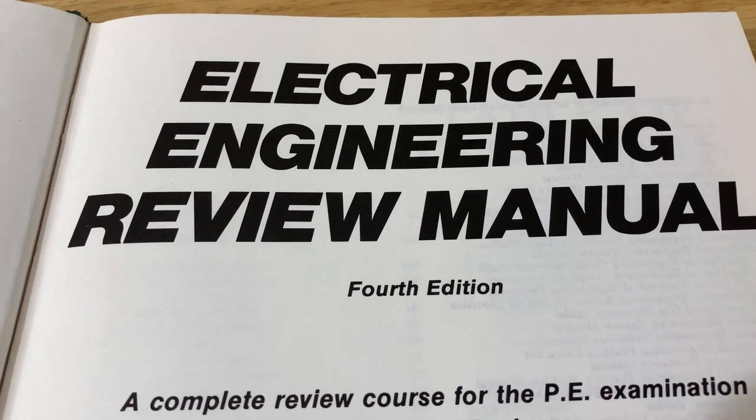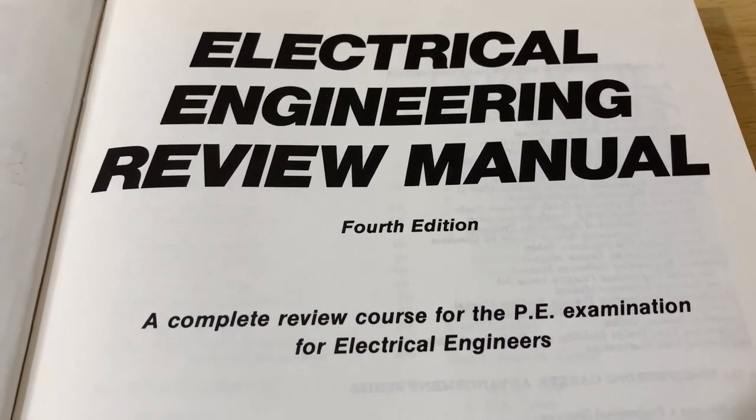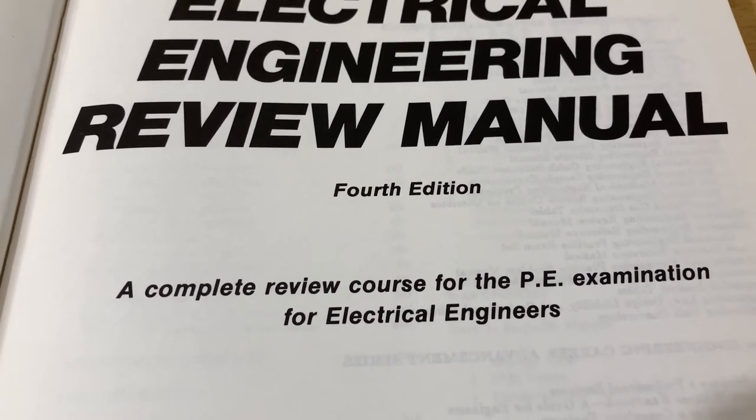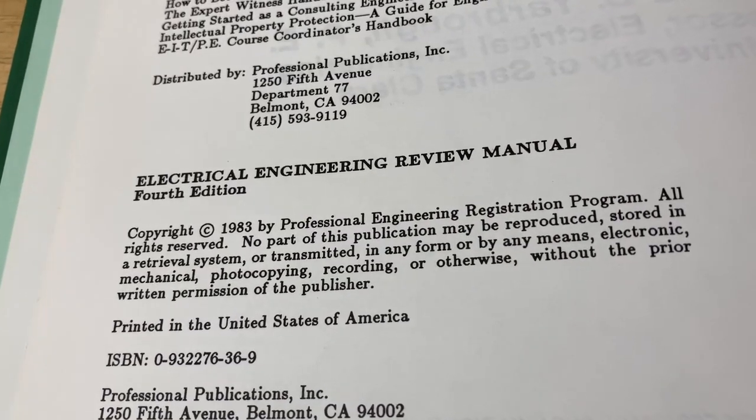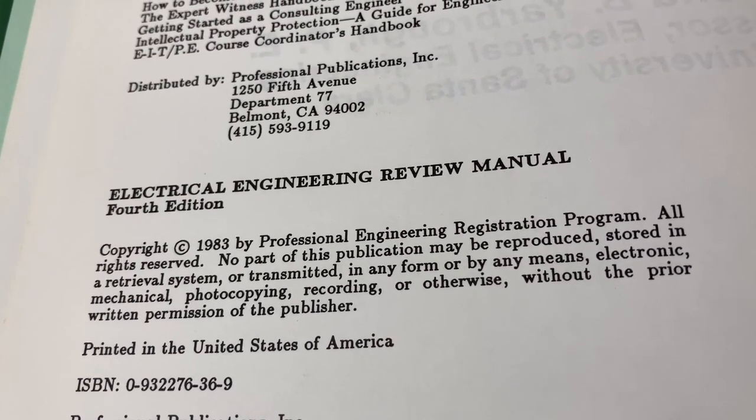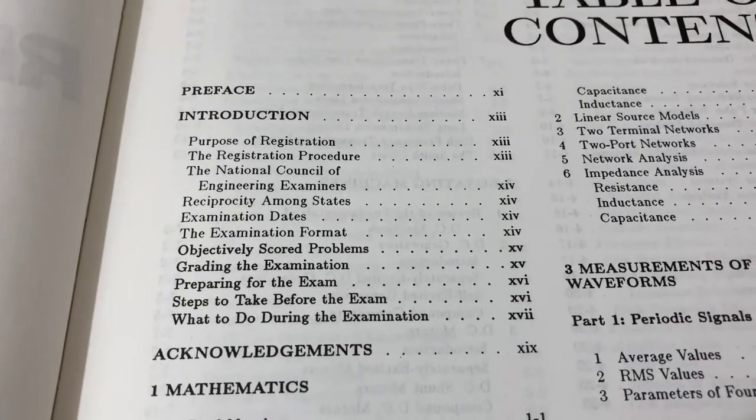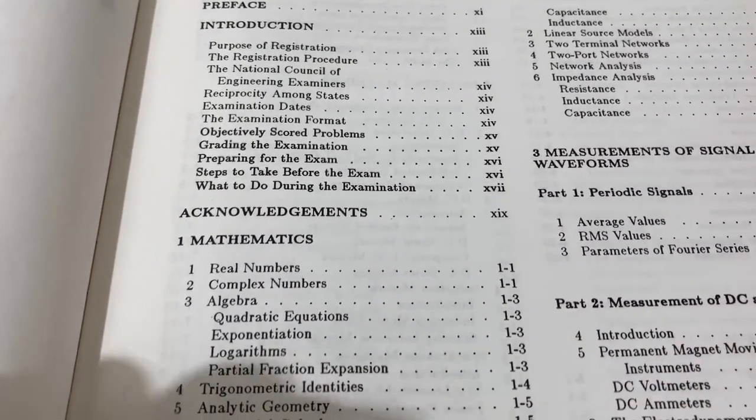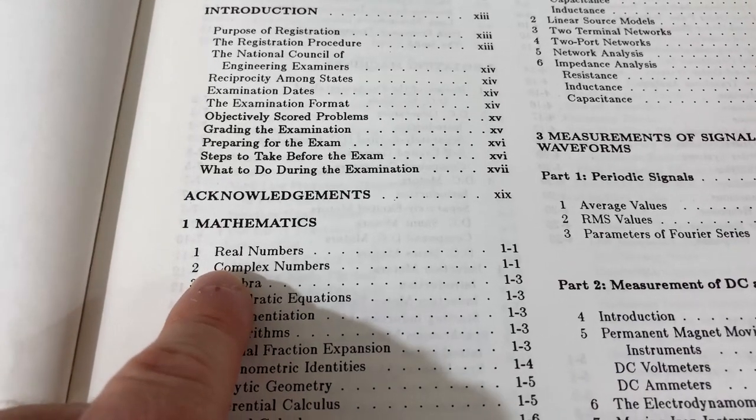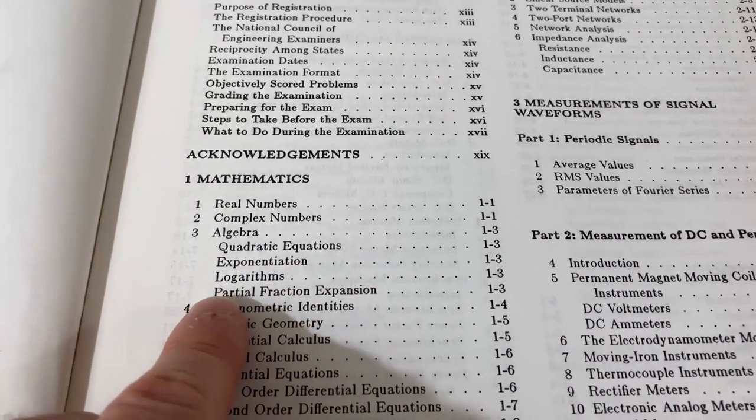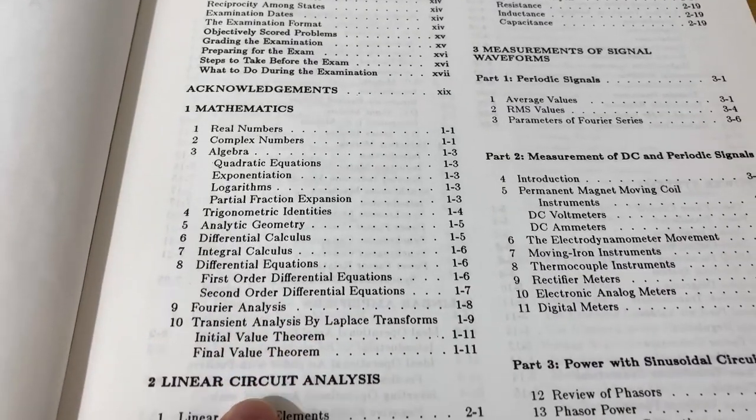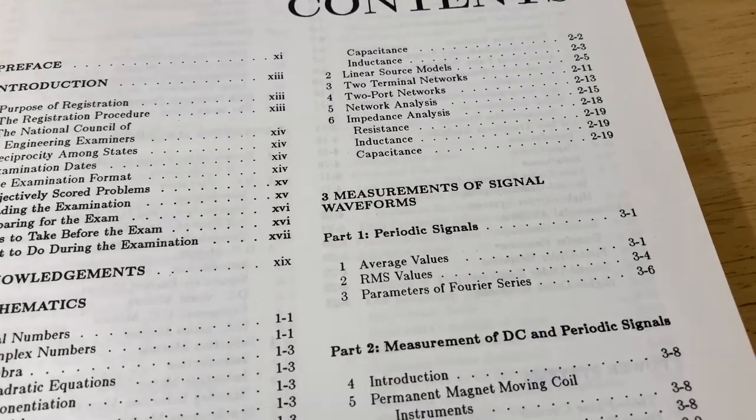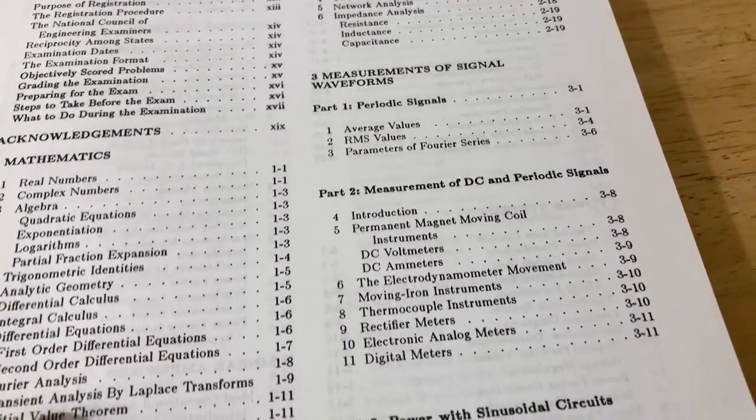Here is the inside cover: Electrical Engineering Review Manual fourth edition, a complete review course for the PE examination for electrical engineers. There's the copyright 1983. It's definitely been a while and I'm just briefly going to go through the topics and I want you to notice something as I go through each section, notice how small the sections are. So real numbers, complex numbers, algebra. It goes quickly from one page to the other very quickly. In other words it's extremely dense, it's just filled with knowledge.